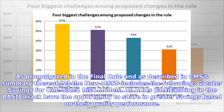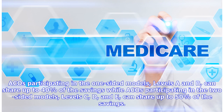Greater savings for one-sided risk models: all ACOs participating in the Basic Track have the opportunity to share in greater savings based on their quality performance. ACOs participating in the one-sided models — Levels A and B — can share up to 40 percent of the savings, while ACOs participating in the two-sided models — Levels C, D, and E — can share up to 50 percent of the savings.